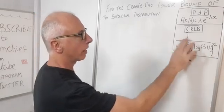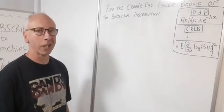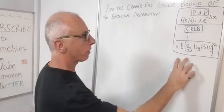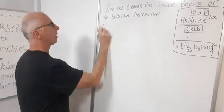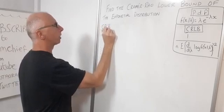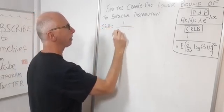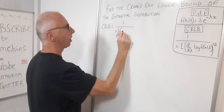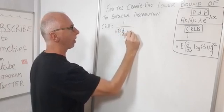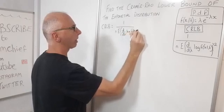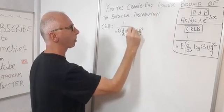This formula looks pretty intimidating, but if you break it down it's actually pretty straightforward. The Cramér-Rao lower bound is one over n times the expectation of the derivative with respect to lambda of the log of f(x|lambda), and that entire term is squared.